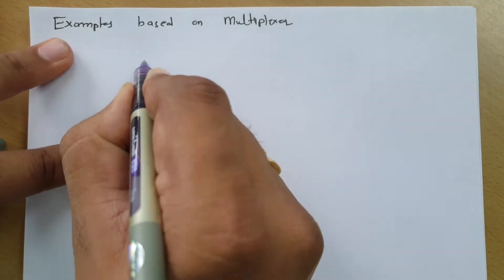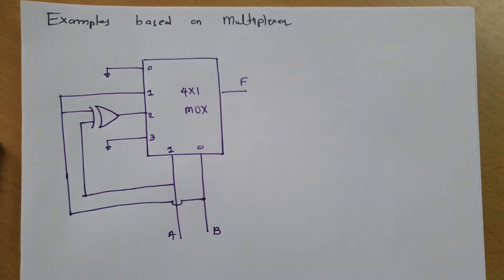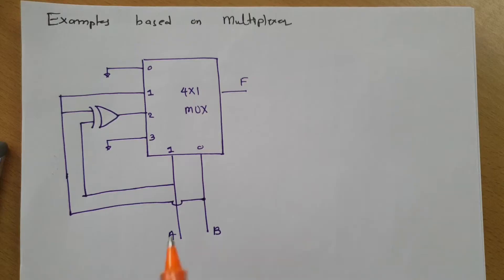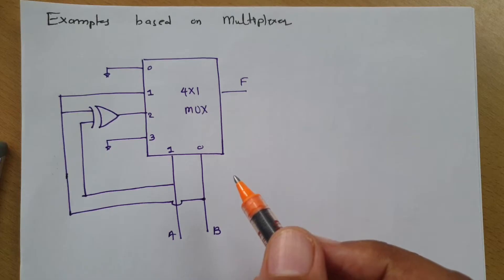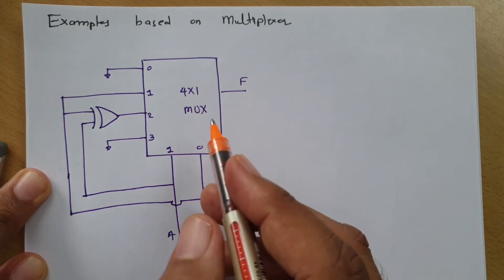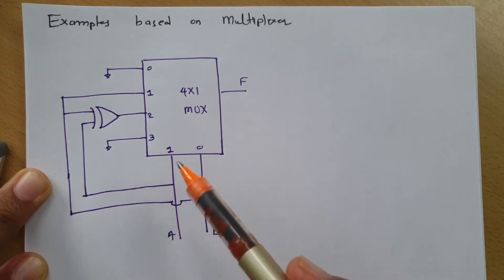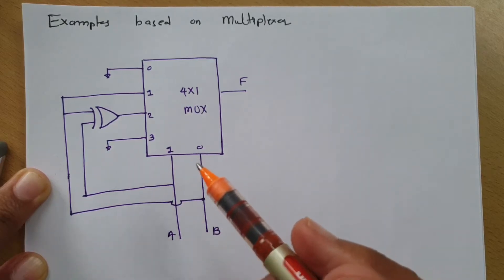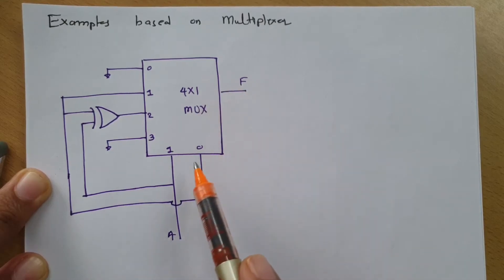So the first question: you can see here we have been given a multiplexer circuit, and our agenda is to identify what the output function F is. Whenever you have any question based on a multiplexer, first you will have to identify what the inputs are with the given circuit. Once you identify the inputs, you can easily write the output function based on the selection lines.